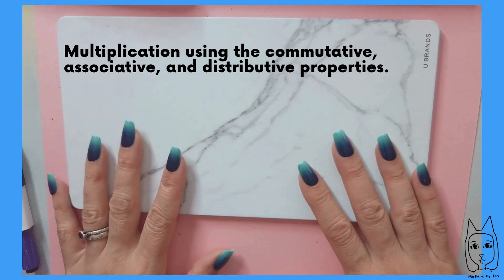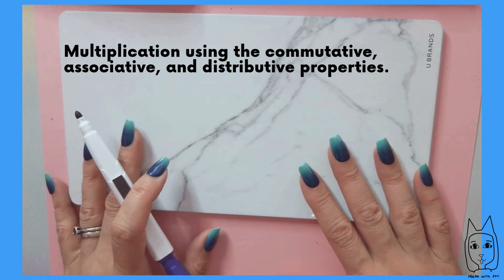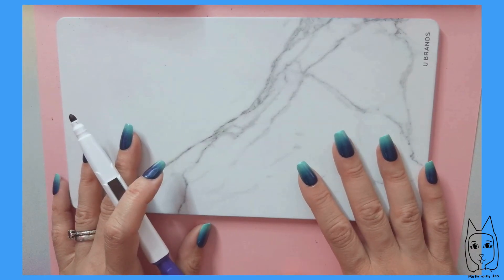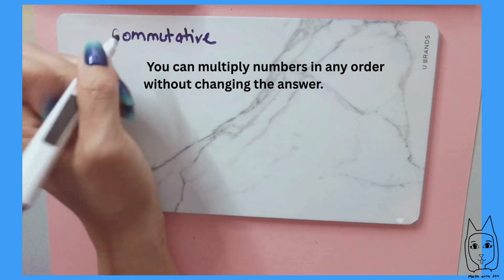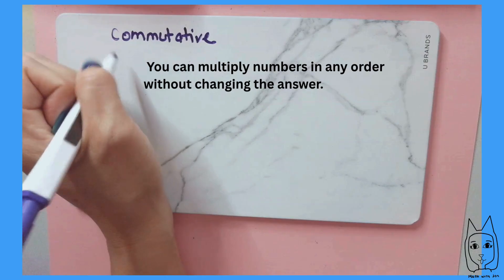Hi, welcome to Math with Jen. There are three properties that you can keep in mind when multiplying. The first one is called commutative property. This means that you can put the factors in any order.